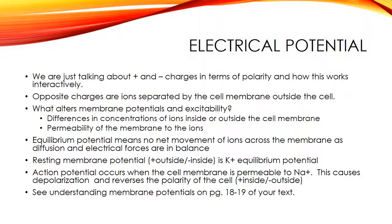When cells are stimulated, ion channels can open or close, which changes the ability for specific ions to diffuse. Ion diffusion that causes the inside of the cell to become more positive causes depolarization — sodium or calcium ions diffusing into cells, for example. Ion diffusion that causes the inside to become more negative causes hyperpolarization or repolarization if the cell was first depolarized. In neurons, depolarizing graded potentials can stimulate action potentials to send signals to other cells, and changes in ion diffusion across the membrane can stimulate signaling in other cells such as muscles and glands.